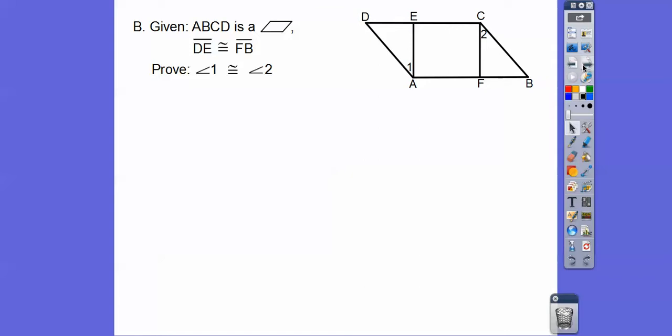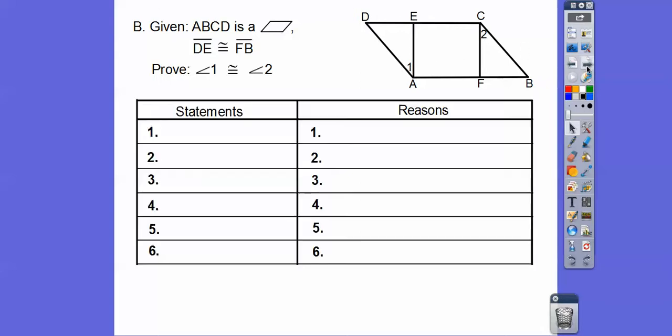So given, this one's not in the book, I found this one online, so it's just another parallelogram. And it's given that this is equal to this right here, so what we're going to do is get this triangle here congruent to this triangle over here, then we can say CPCTC. This one has six steps.